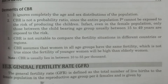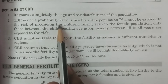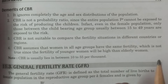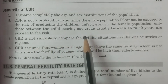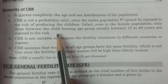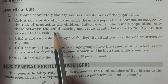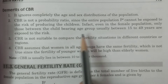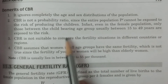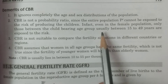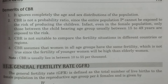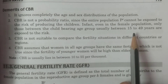Secondly, CBR is not a probability ratio. This is very important. The entire population PT cannot be exposed to the risk of producing children — only females can. And even among females, only those in the child-bearing age group can produce children. The child-bearing age group is typically 15 to 49 years — only females in this age group are at risk of producing children.